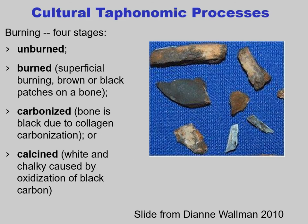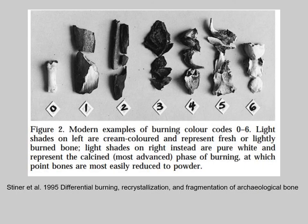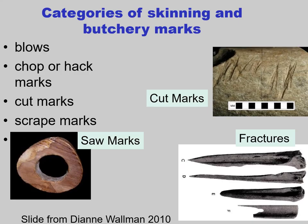You can think about burning in four stages: unburnt; burnt, where you see black or brown patches on a bone; carbonized, where the collagen has been burnt; and calcined — white and chalky, caused by oxidation of the black carbon. Archaeologists do experimental archaeology testing the results of burning at different stages, going from unburnt on the left all the way to heavily calcined on the right. Other cultural effects on bones include categories of skinning and butchery: blows, chopper hack marks, cut marks, scrape marks, and saw marks.